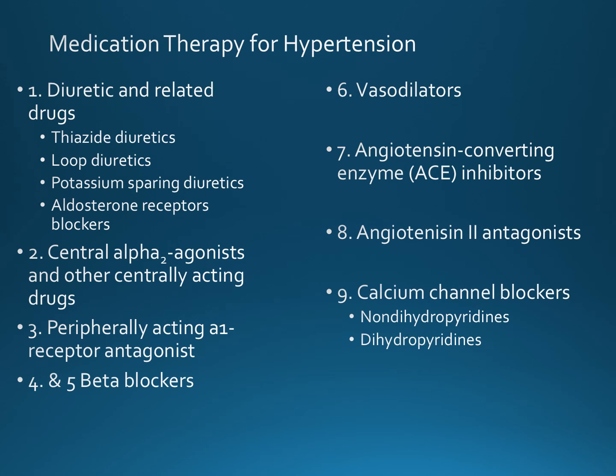The peripherally acting alpha-1 receptor antagonists are used for treatment of hypertension, relief of symptoms of benign prostatic hypertrophy, and management of severe heart failure when used with cardiac glycosides and diuretics. Then there are the beta blockers, which reduce blood pressure by reducing the heart rate through beta-1 blockade, cause reduced secretion of renin, and with long-term use cause reduced peripheral vascular resistance. Examples include propranolol, atenolol, and metoprolol.